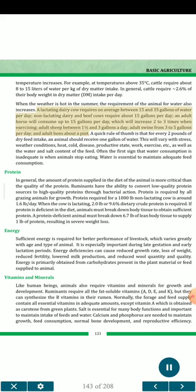A lactating dairy cow requires on average between 15 and 35 gallons of water per day. Non-lactating dairy and beef cows require about 15 gallons per day. An adult horse will consume up to 15 gallons per day, which will increase 2 to 3 times when exercising. Adult sheep between 1.5 and 3 gallons a day, adult swine from 3 to 5 gallons per day, and adult hens about a pint. A quick rule of thumb is that for every 2 pounds of dry feed intake, an animal should receive one gallon of water.